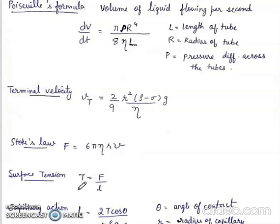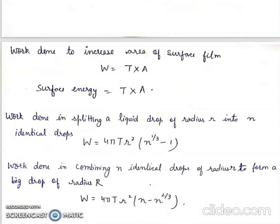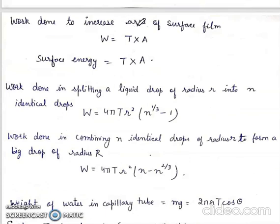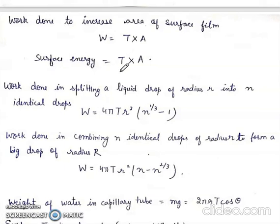Surface tension is force per unit length. Work done to increase the area of surface film. W is equal to T into A. Surface energy is equal to surface tension into area.